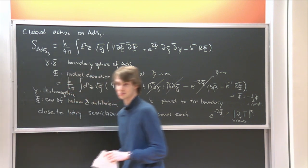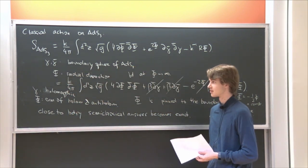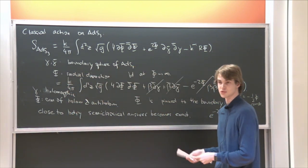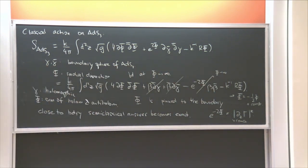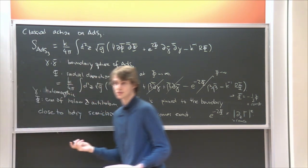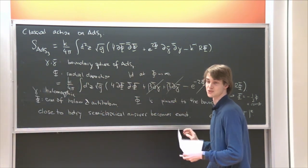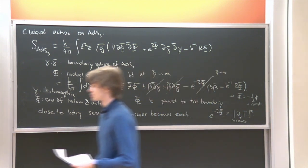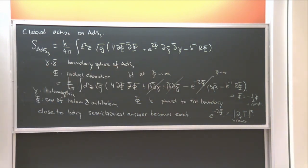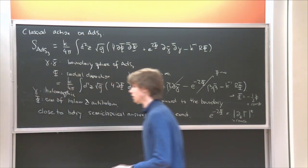This was the first part. One question is whether this last term in the action should be written at the classical level — it might be that when you go to the beta variables, you generate it. So perhaps I shouldn't write it at the classical level.